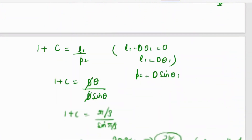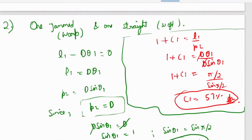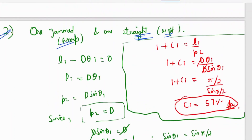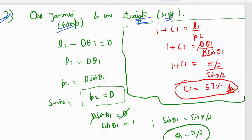Case number two is a one-jammed and one-straight fabric — one side is jammed and one side is straight. In this case, the existing formulas do not apply. What you need to remember is that θ = π/2. When you calculate the crimp percent for this case, the crimp percent is always 57 percent.